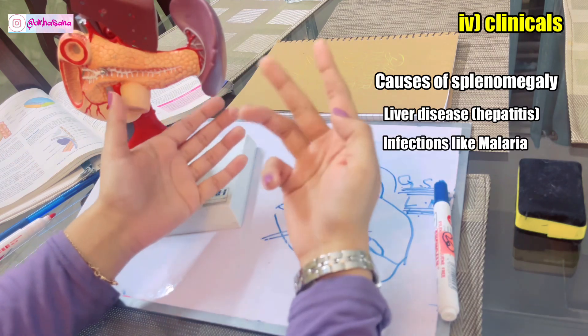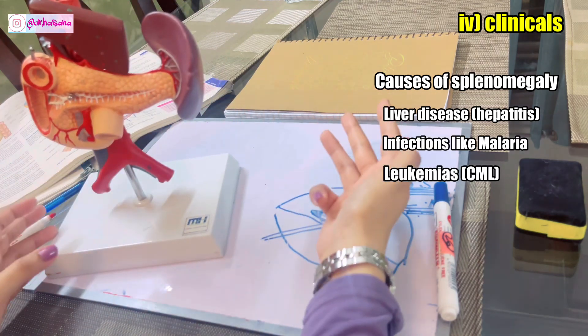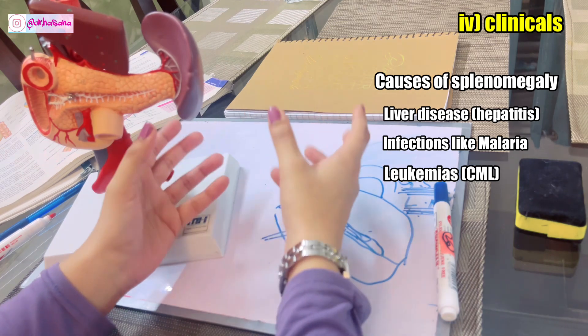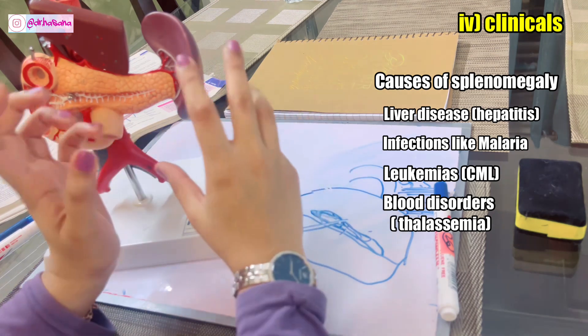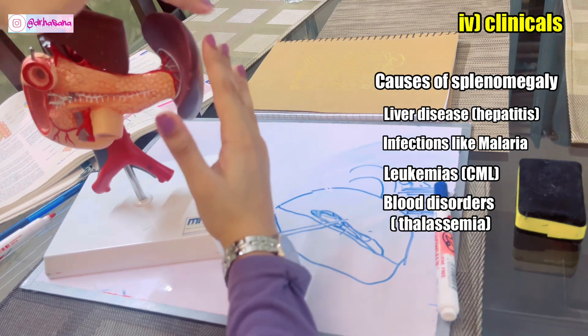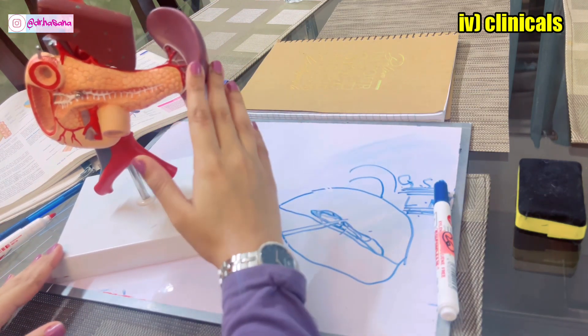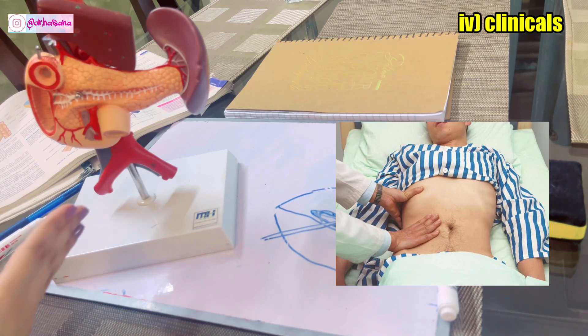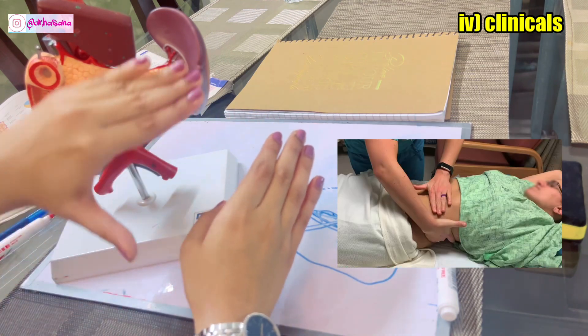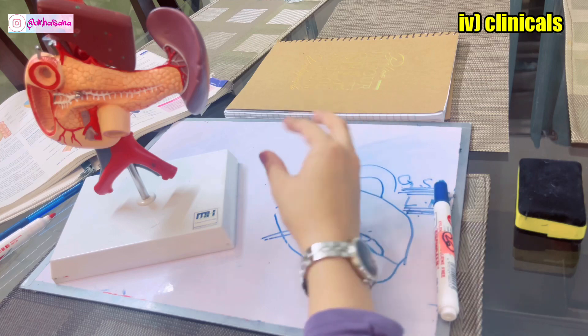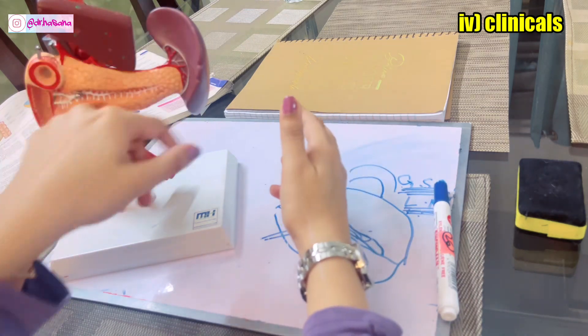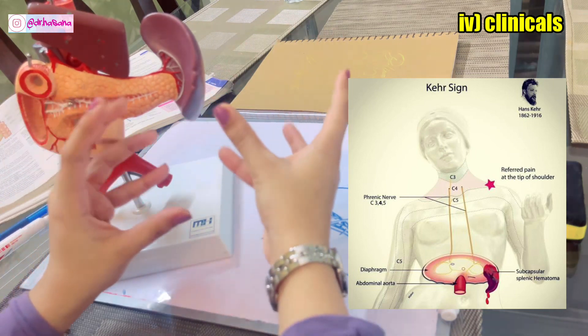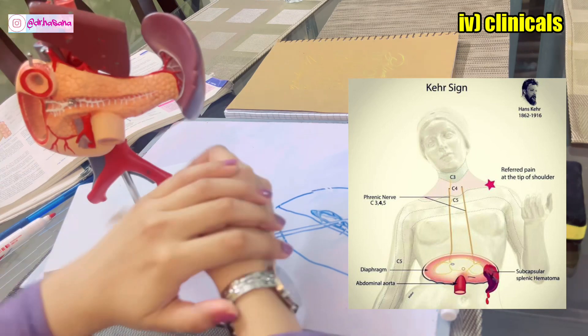Another cause of splenomegaly could be malaria. Another cause could be cancer like leukemias. Then there is massive destruction of RBCs, which usually occurs in blood disorders like sickle cell anemia or thalassemia. The spleen is breaking them down so much that it undergoes enlargement. The spleen is always palpated in the right iliac fossa first because spleen usually enlarges towards the right iliac fossa. Whenever there is pain in spleen, the pain will be in the left hypochondrium and will also be referred to the left shoulder. This is known as the Kehr sign, especially in splenic infarction.